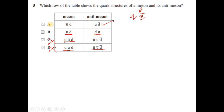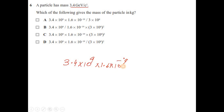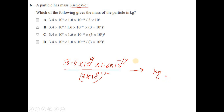Question 6: a particle has mass 3.4 GeV/c². To convert to kilograms, multiply 3.4 × 10⁹ (giga) by the electron volt conversion 1.6 × 10⁻¹⁹ J/eV to get energy in joules, then divide by c² = (3 × 10⁸)². This gives the mass of the particle in kilograms. The answer is option D.